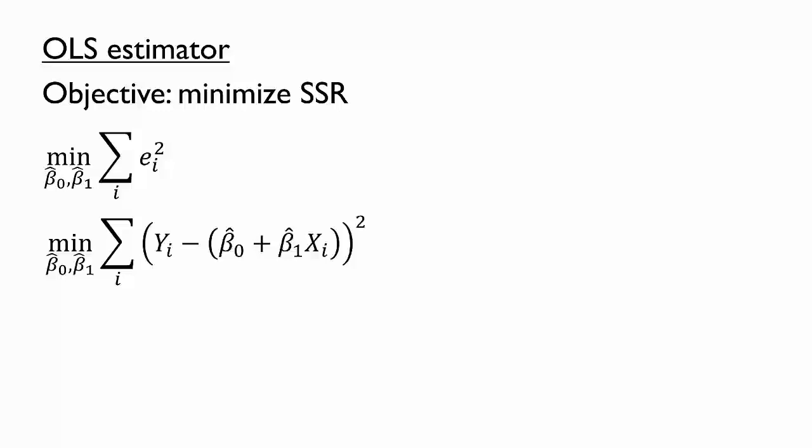Recall from your calculus class that to find the minimum of a function, you can set the first derivative equal to 0. Here we can set two separate first derivatives equal to 0, one with respect to β̂₀ and the other with respect to β̂₁.